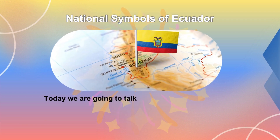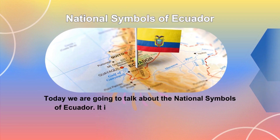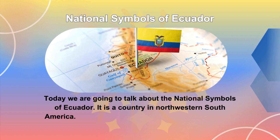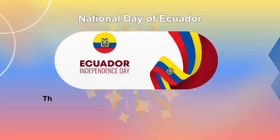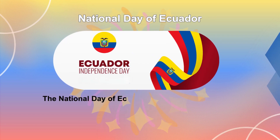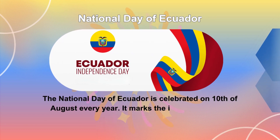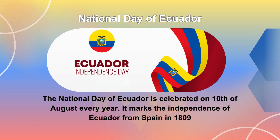Today we are going to talk about the National Symbols of Ecuador. It is a country in northwestern South America, officially known as the Republic of Ecuador. The National Day of Ecuador is celebrated on the 10th of August every year, marking the independence of Ecuador from Spain in 1809.